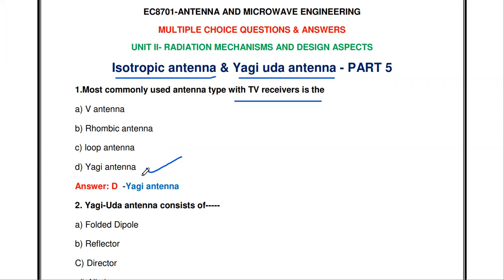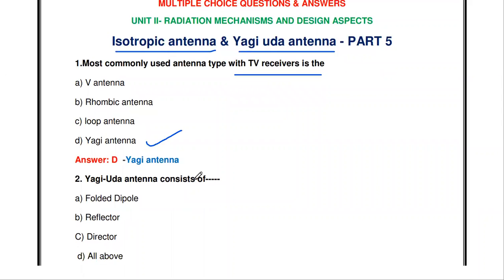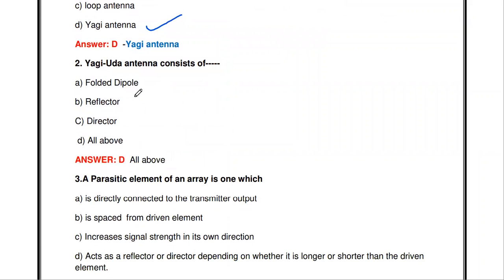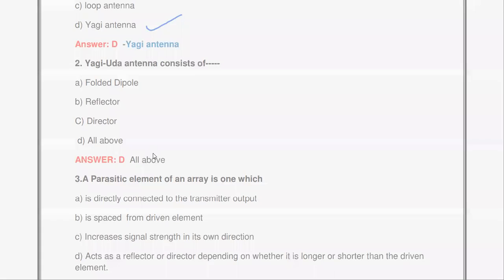The next question: the Yagi-Yuda antenna consists of — folded dipole, reflector, director, or all of the above? The Yagi-Yuda antenna consists of all three things: folded dipole, reflector, and director. So 'all of the above' is correct.